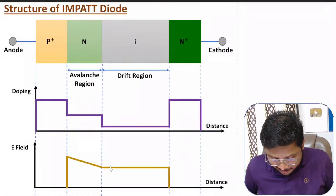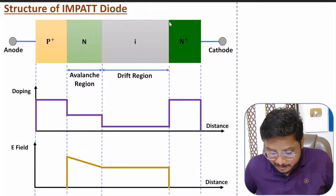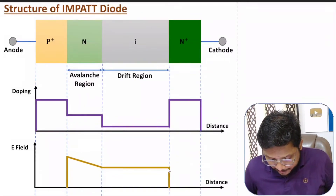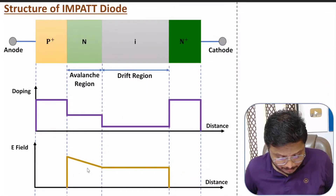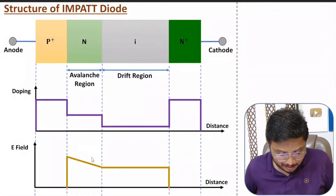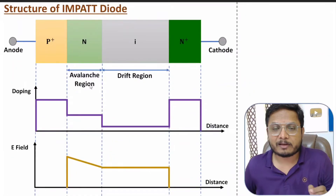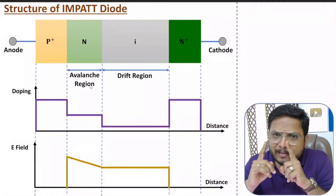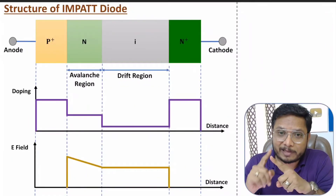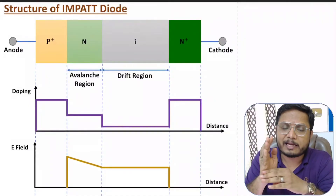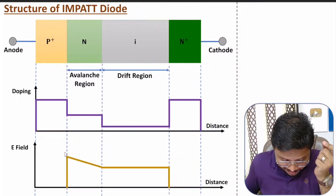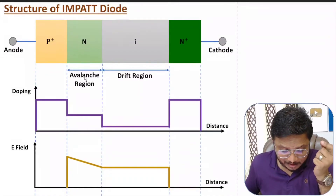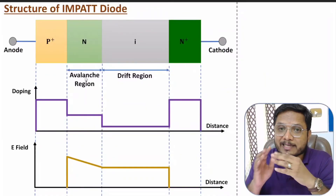Based on the doping profile, the electric field is highest at the p-n junction, decreases linearly in the n region, remains constant through the intrinsic layer, and becomes zero after the junction on the other side. The region with maximum electric field is the avalanche region, because charge carrier multiplication occurs only in that region.